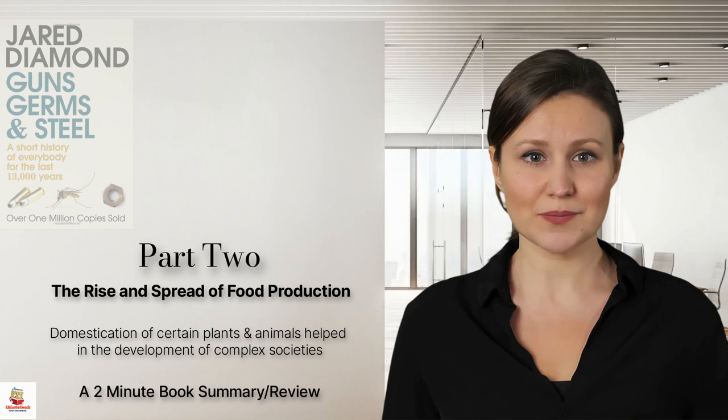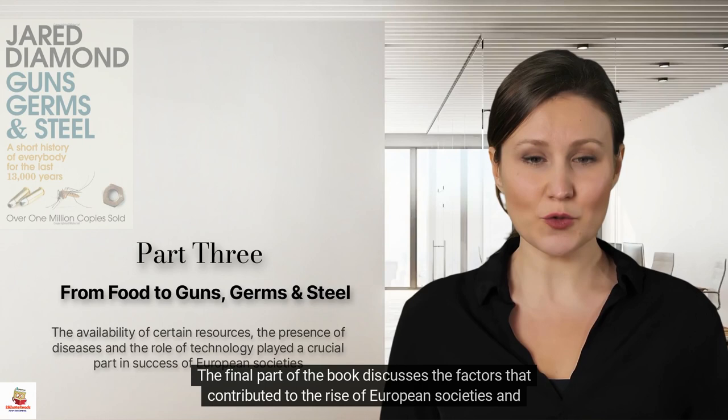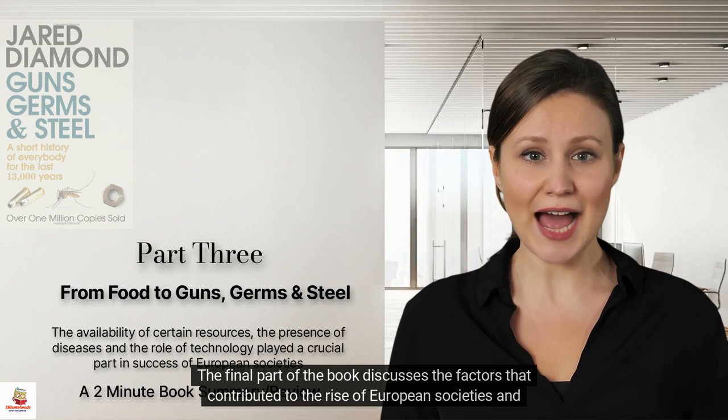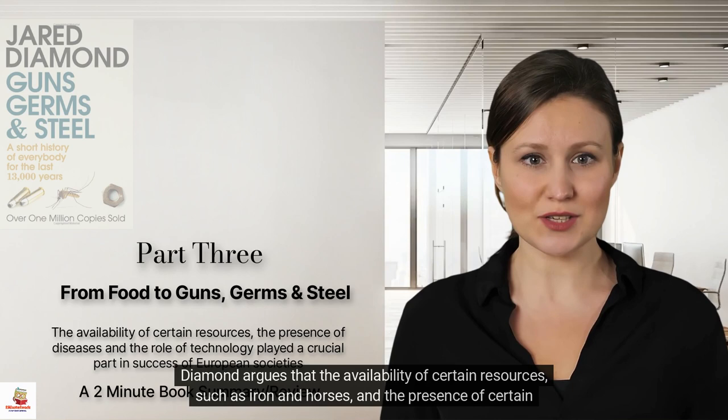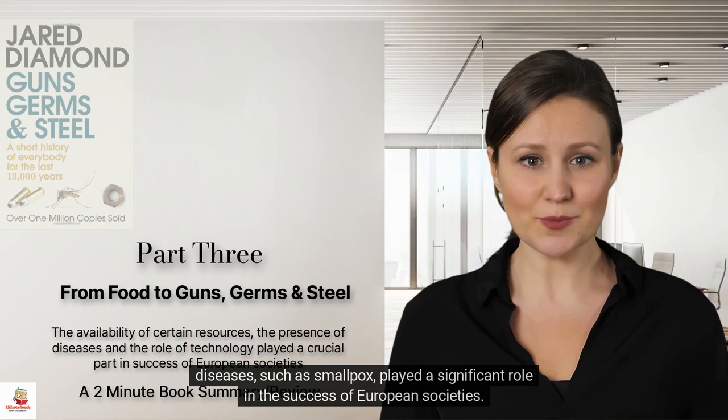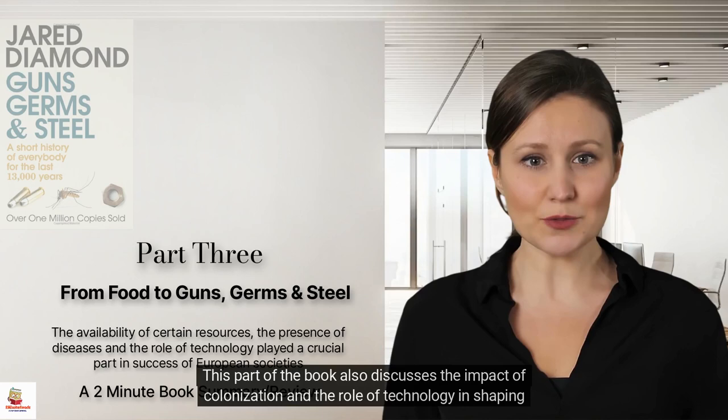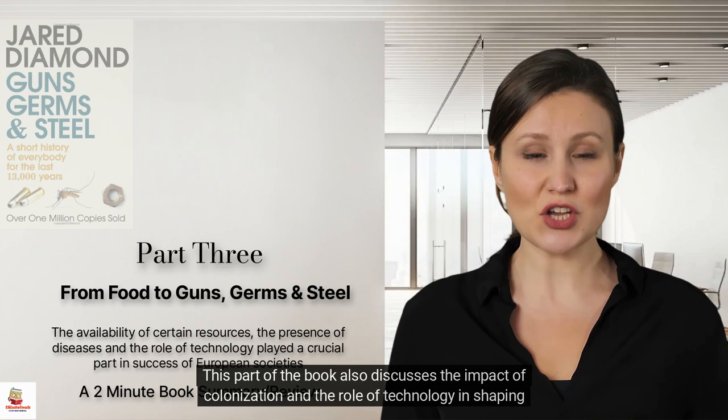Part 3: From Food to Guns, Germs and Steel. The final part of the book discusses the factors that contributed to the rise of European societies and their dominance over other societies. Diamond argues that the availability of certain resources, such as iron and horses, and the presence of certain diseases, such as smallpox, played a significant role in the success of European societies. This part also discusses the impact of colonization and the role of technology in shaping human history.